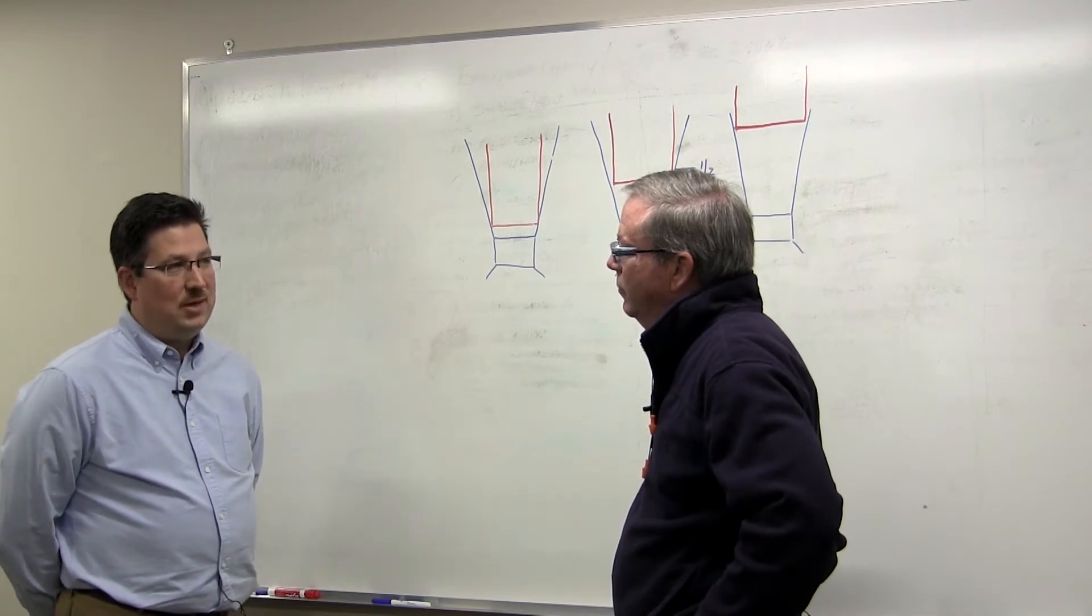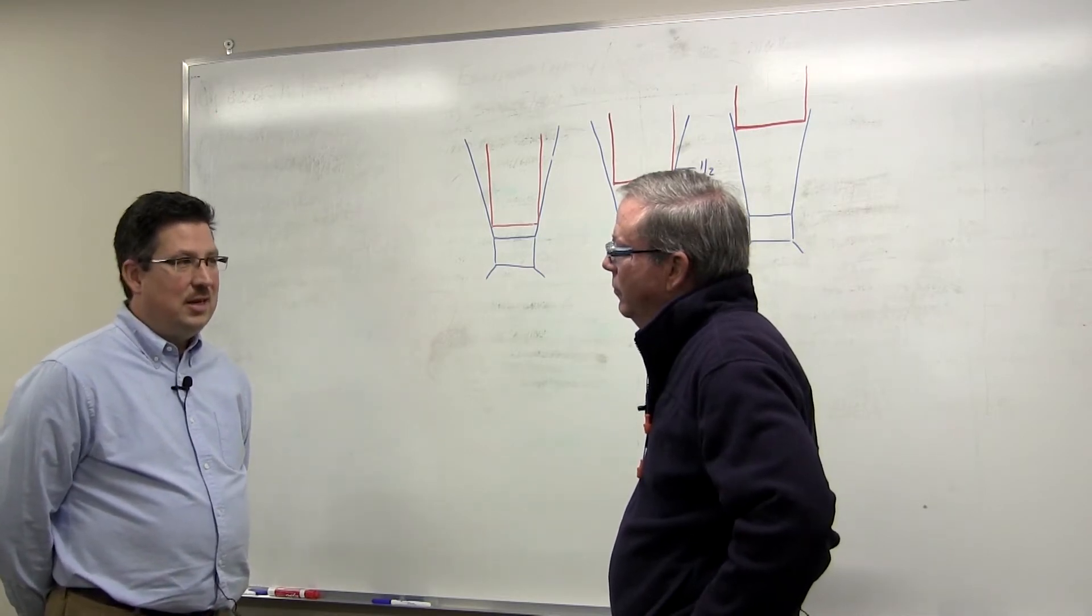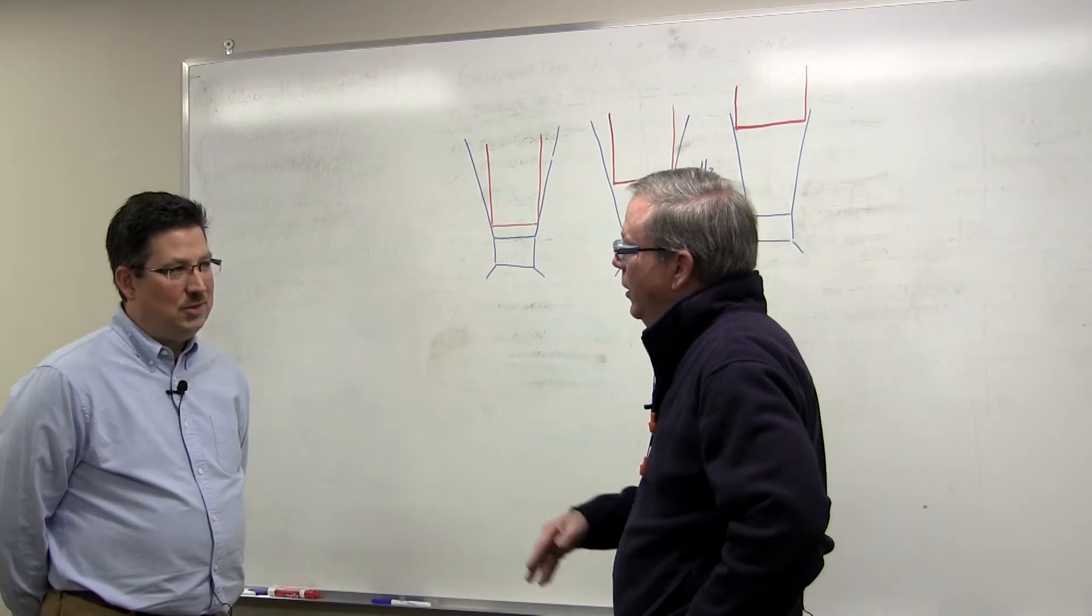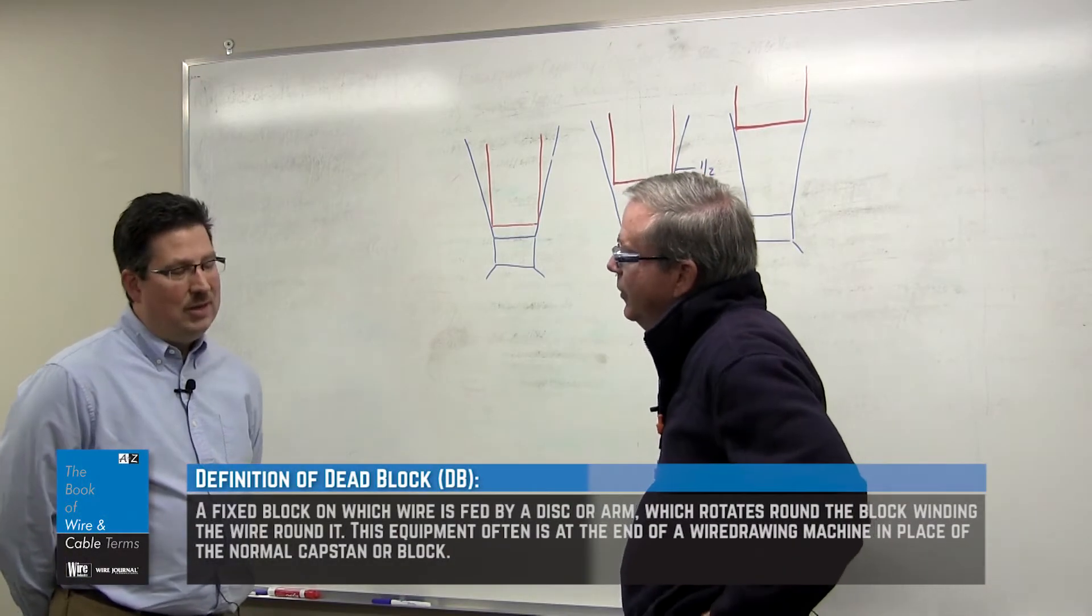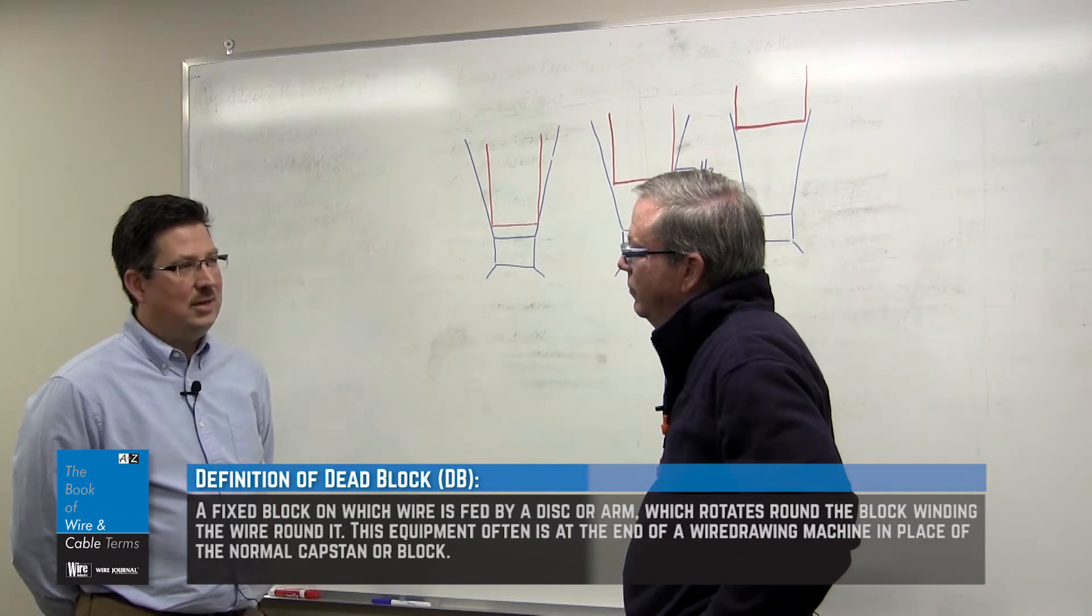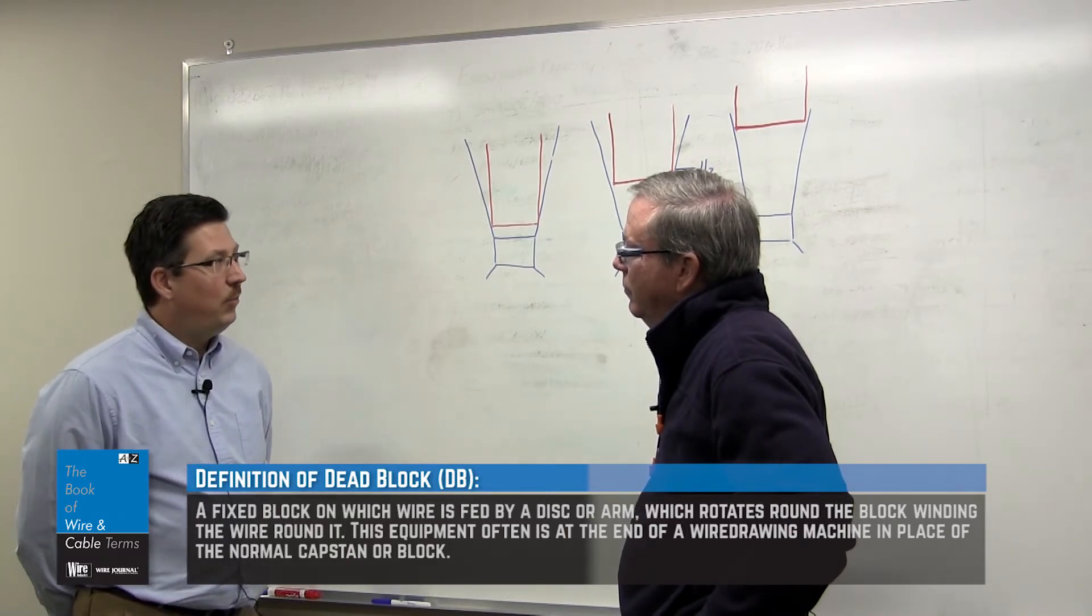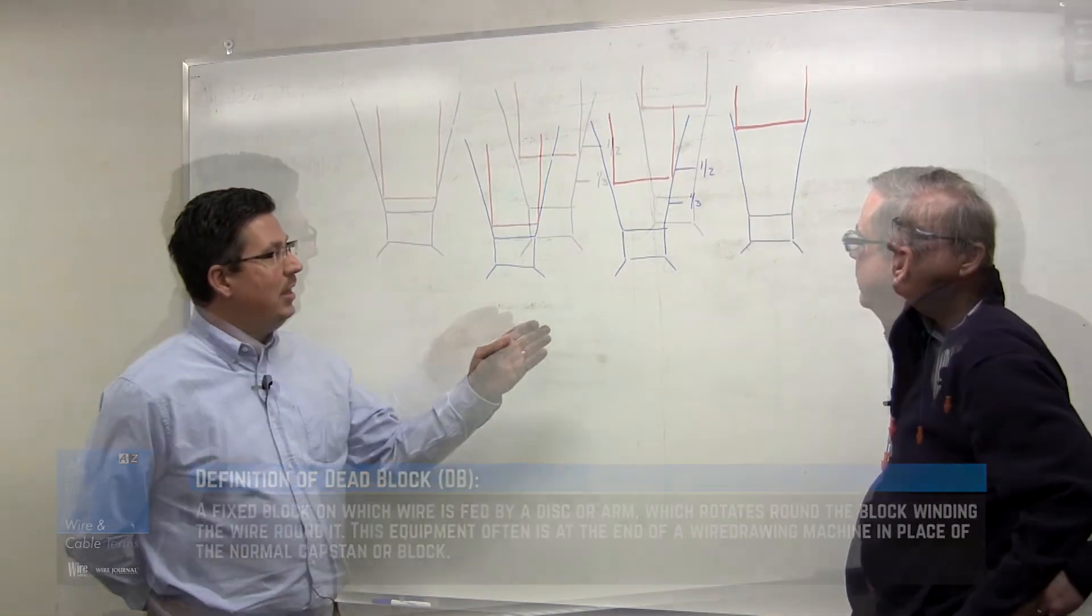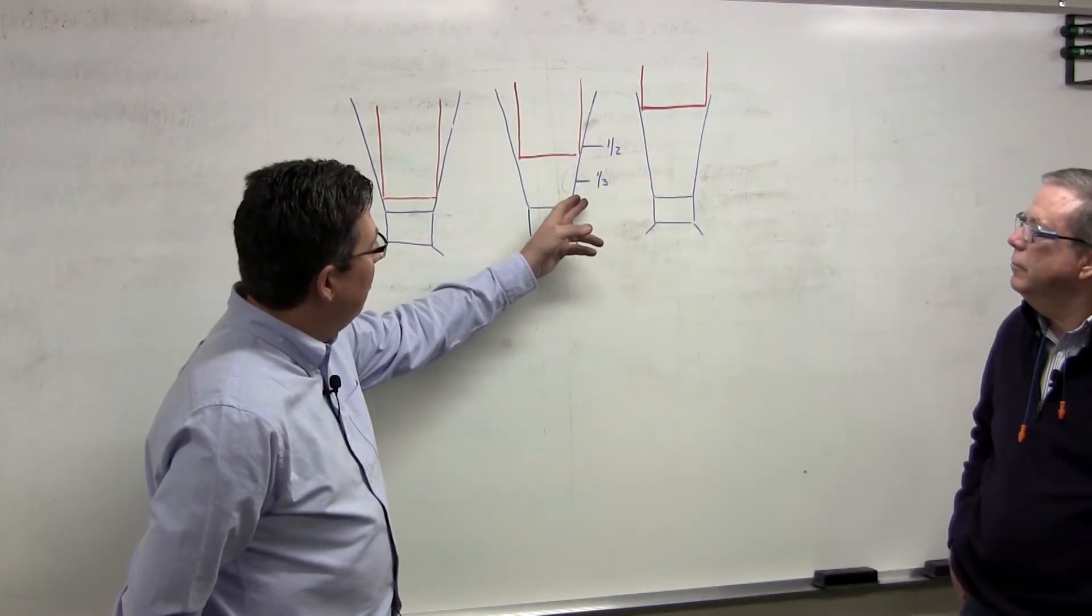What happens is when you taper draft and you're going from an extreme of say 30-35 percent all the way down to say an 11 to 18 percent reduction in the dead block, you can't have the same die angle because it's going to contact in that approach angle at different locations.